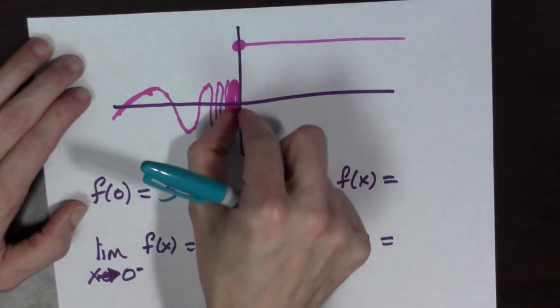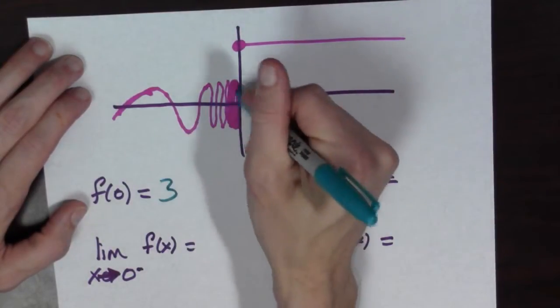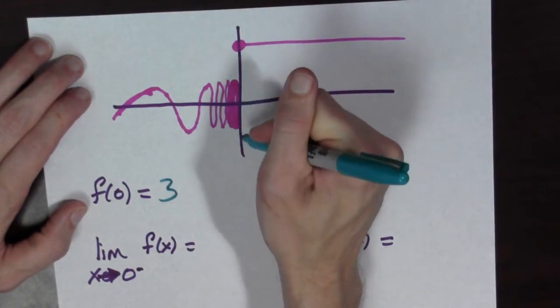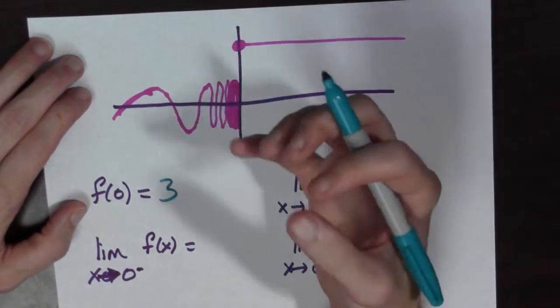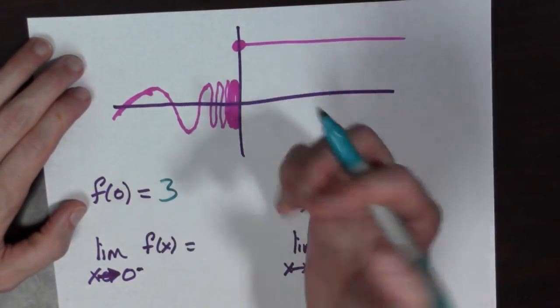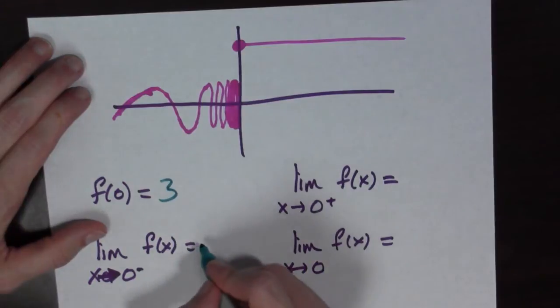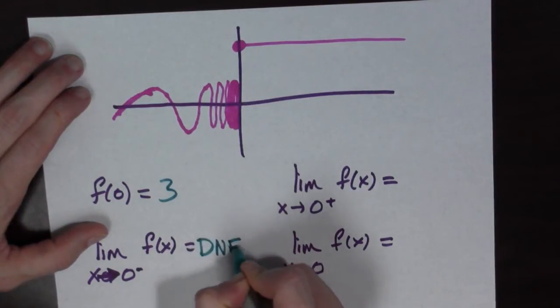Basically, as you get within delta, the value here can be negative 1 or 1. And so you can't control the value of the function at all. So this does not exist.